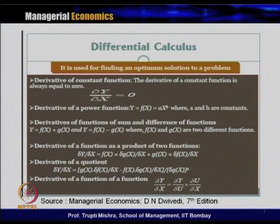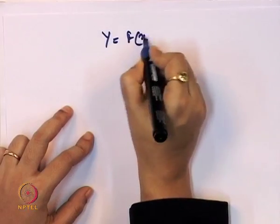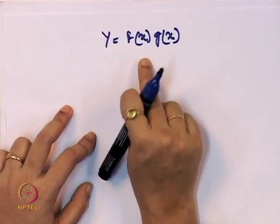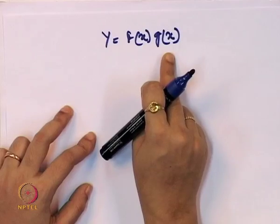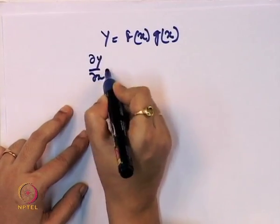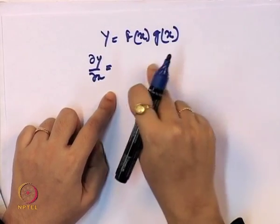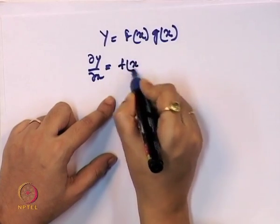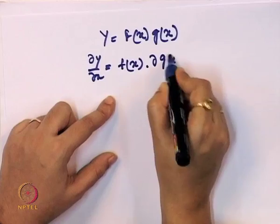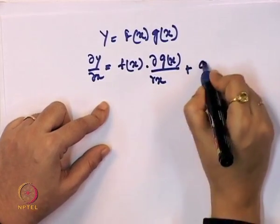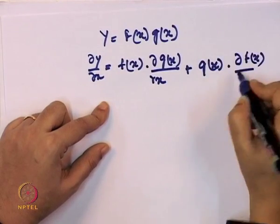In the last case we handled summation and subtraction. Now, when the function is a product of two functions — y = f(x)·g(x) — we take the derivative keeping one part constant while differentiating the other. The formula is: dy/dx = f(x)·dg(x)/dx + g(x)·df(x)/dx.